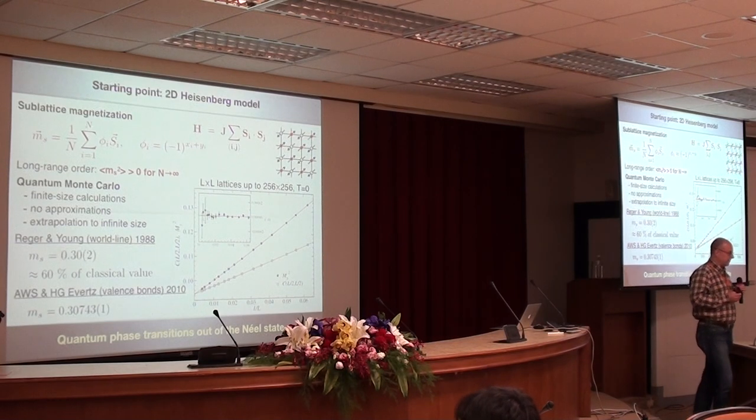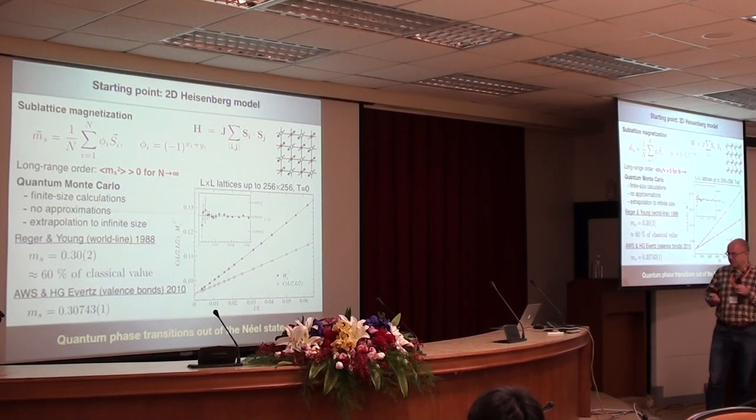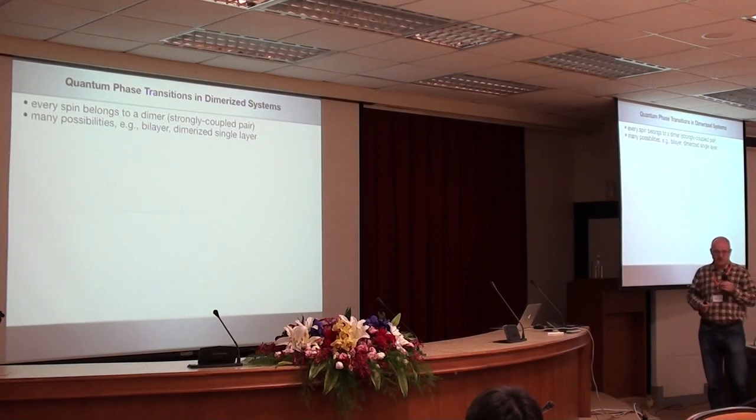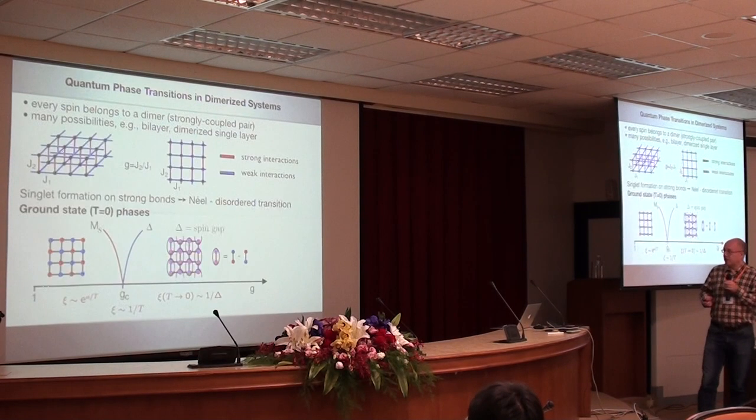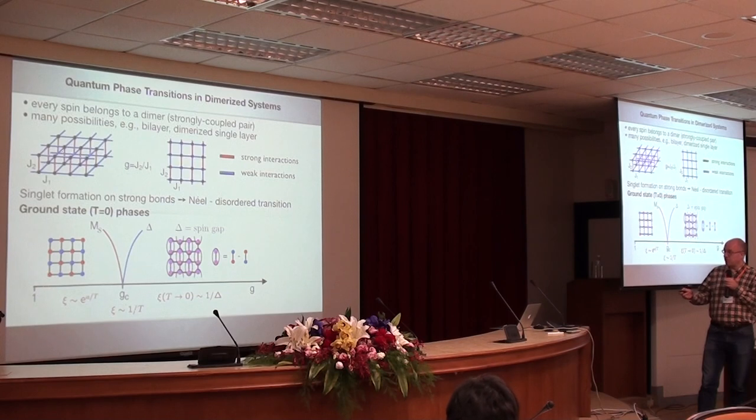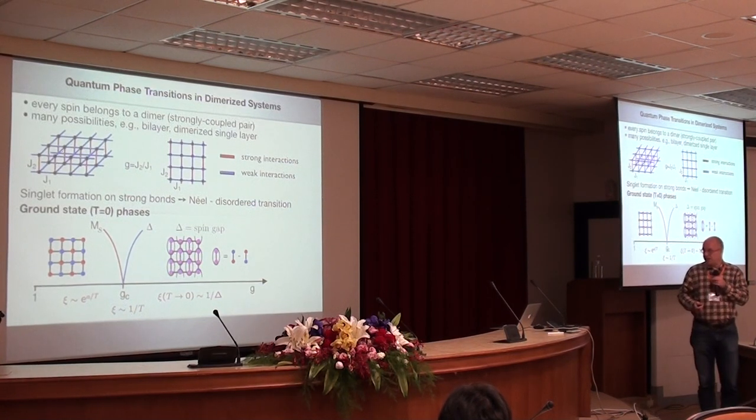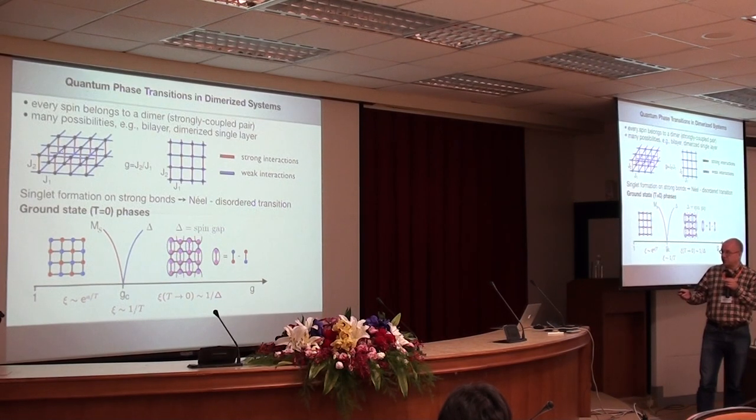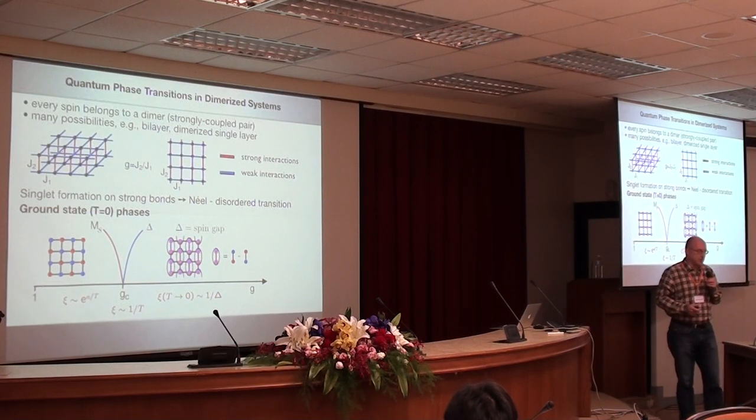Okay, so now, the Néel state is experimentally important and nice, but we would like to do something more interesting. We would like to destroy the Néel order. We feel a little bit destructive and we want to do something else. So the question is what we can do to the Heisenberg model to make it lose the long-range order. And we can do many things. As an introduction, I want to tell you just about some very simple things we can do. We can dimerize the system. If you look at this graph here, we can introduce in the plane two types of couplings. You should think of the red one as stronger than the blue one.